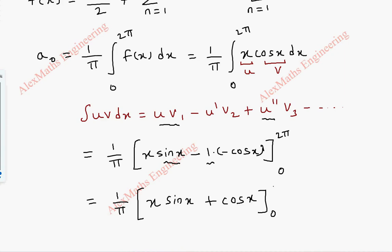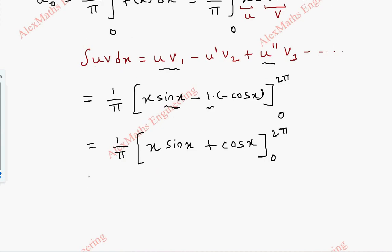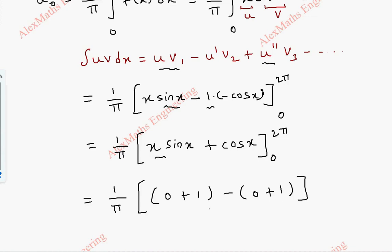We have the limits 0 to 2π. Substituting the upper limit: sin(2π) = 0 and cos(2π) = 1. When putting 0: the first term has x so it is 0, and cos(0) = 1. So totally this is 1 − 1 = 0. Therefore a0 = 0.